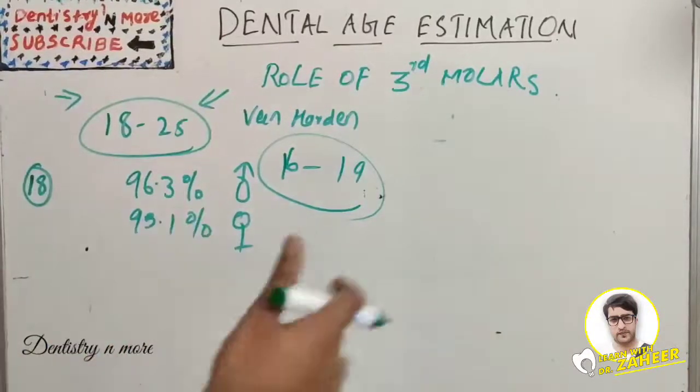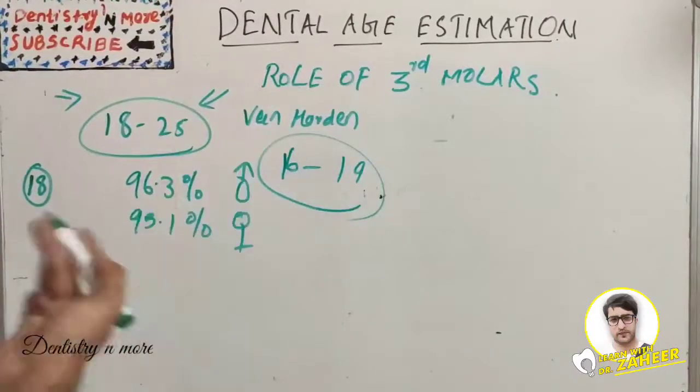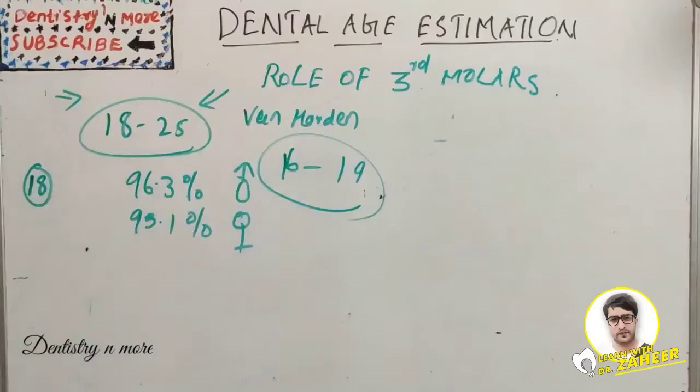This is mostly useful in the adolescent group, around 15 to 20 years or 16 to 19 years, where we can use the calcification of these molars or the root formation of molars in identifying the dental age of a person.